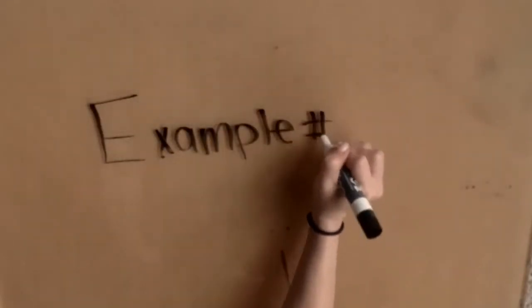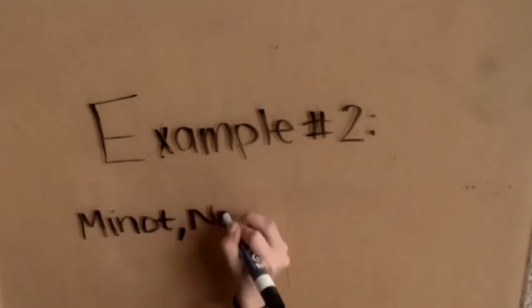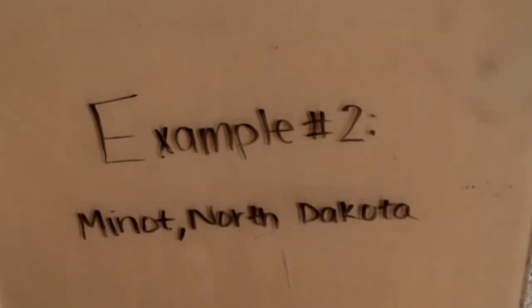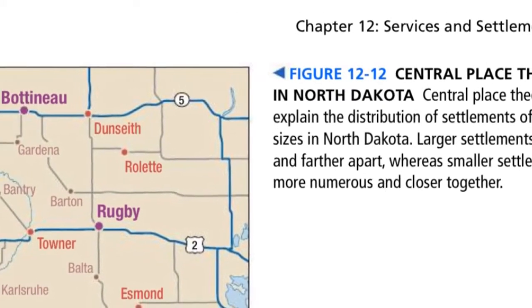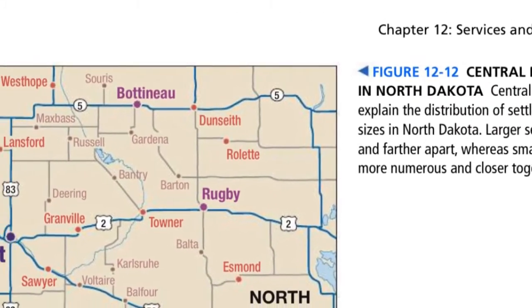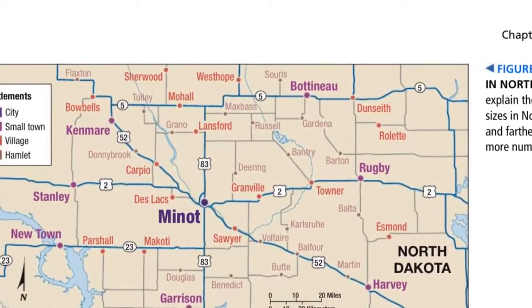Example two, Minot, North Dakota. In North Dakota, the central place theory helps explain the distribution of cities of different sizes. Bigger cities are smaller in number and spread farther apart. On the other hand, smaller cities or towns are bigger in number and are closer together.